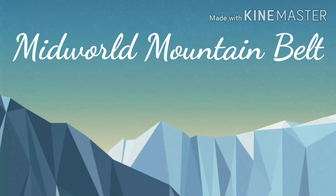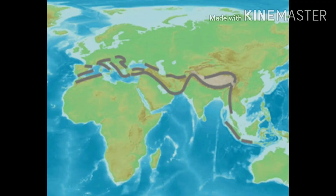Mid-World Mountain Belt: Mount Vesuvius, Mount Etna, Mount Stromboli — the famous active volcanoes are located in the Mid-World Mountain Belt. The only active volcano in India, in the Andaman and Nicobar Islands, is also located in this belt. The Hawaiian Islands, Canary Islands and Mount Kenya are all in the Mid-World Mountain Belt.